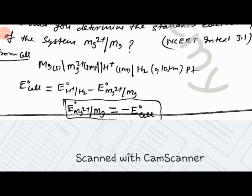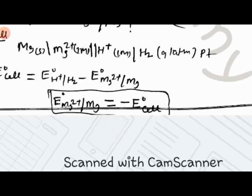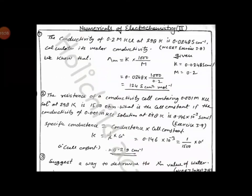You have to write: E not cell equals E not H plus slash H2 minus E not Mg 2 plus slash Mg. Therefore, E not Mg 2 plus slash Mg equals minus E not cell.